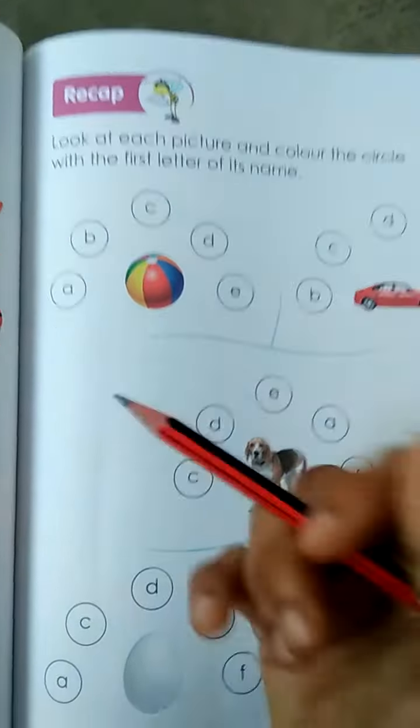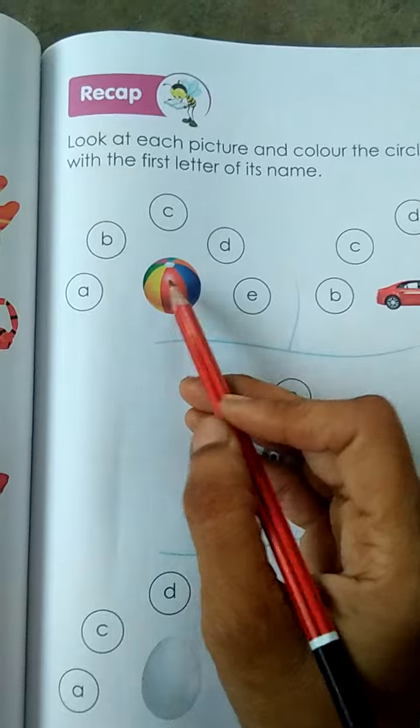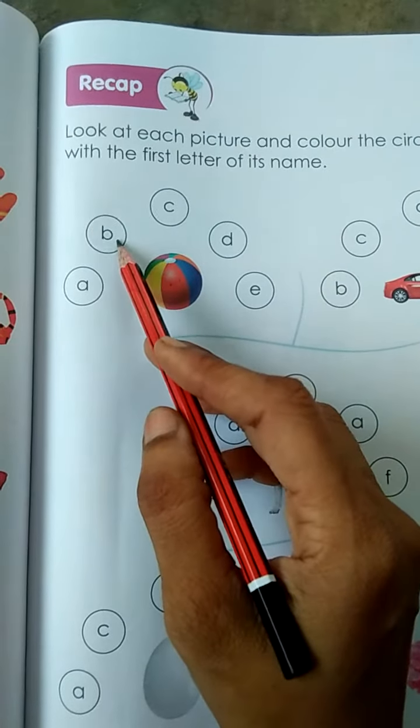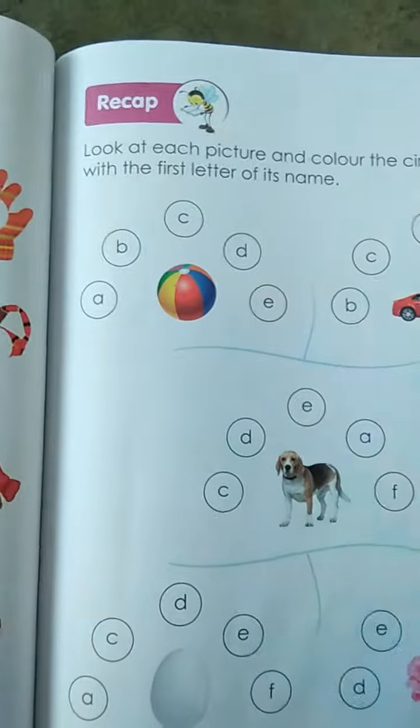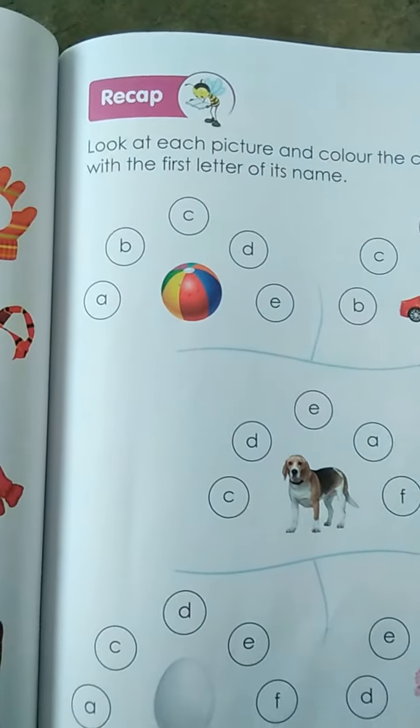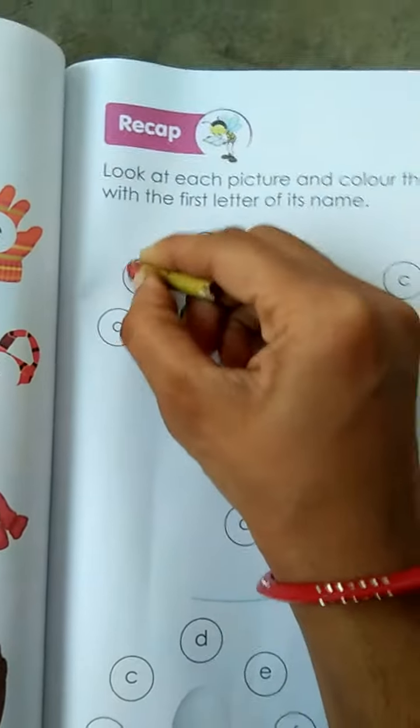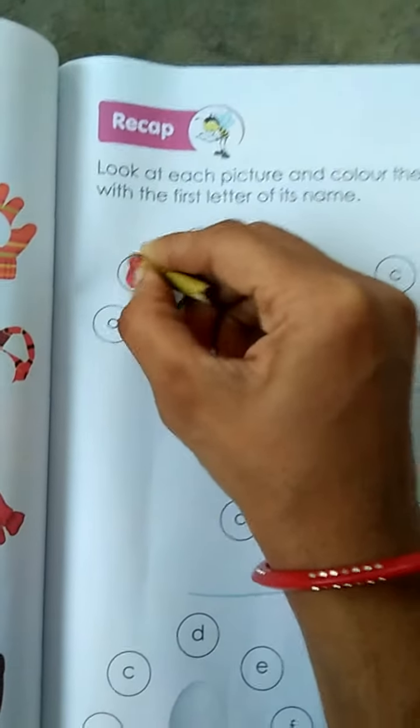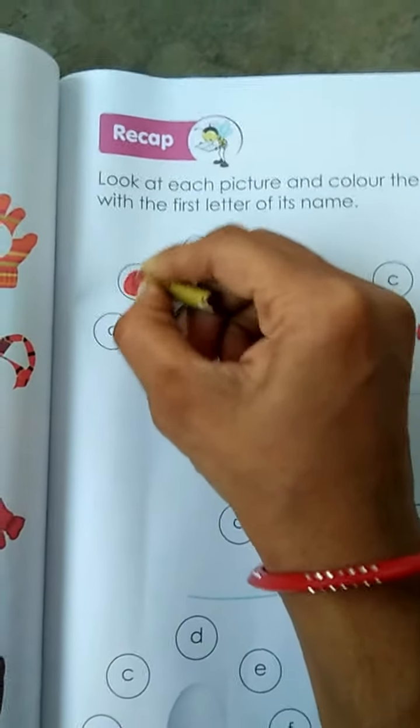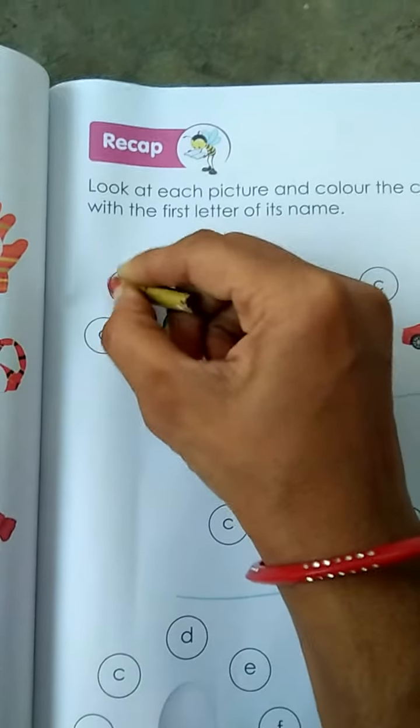What is this? This is a ball. B for ball. Then you have to color in the circle of B like this.